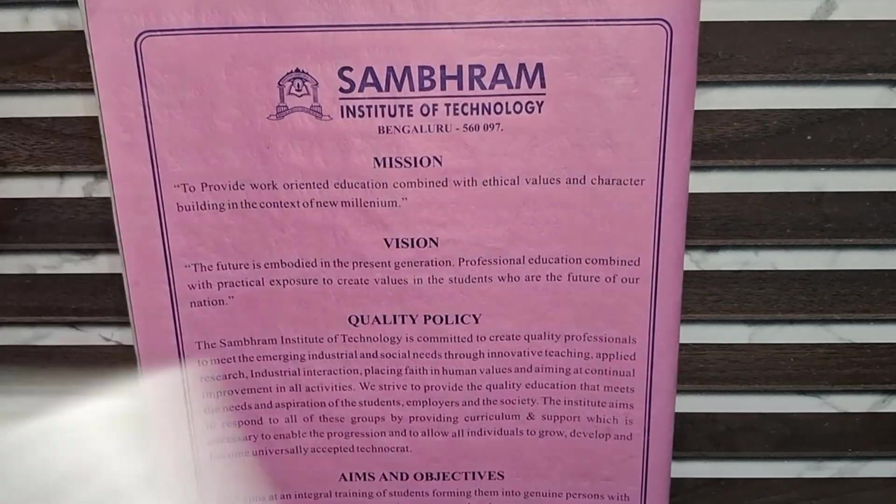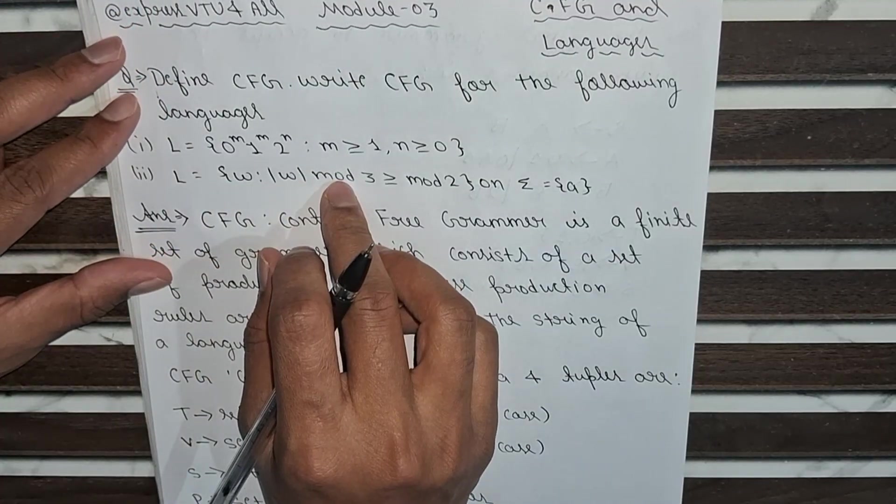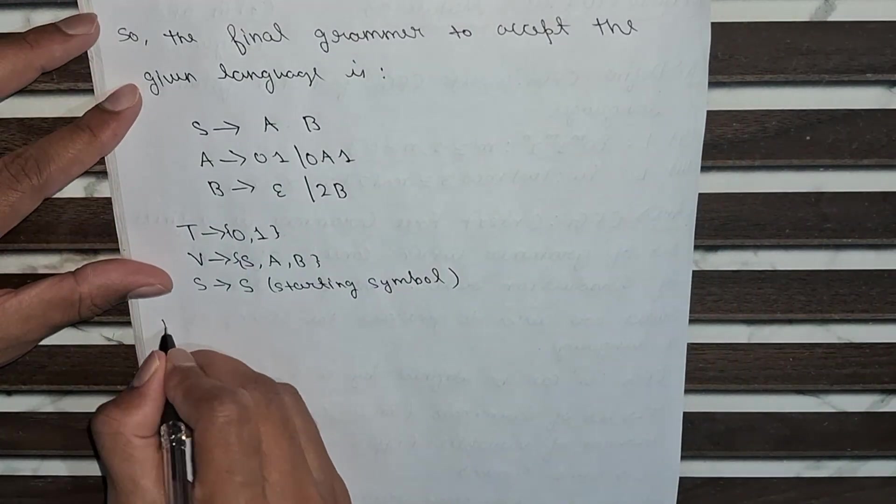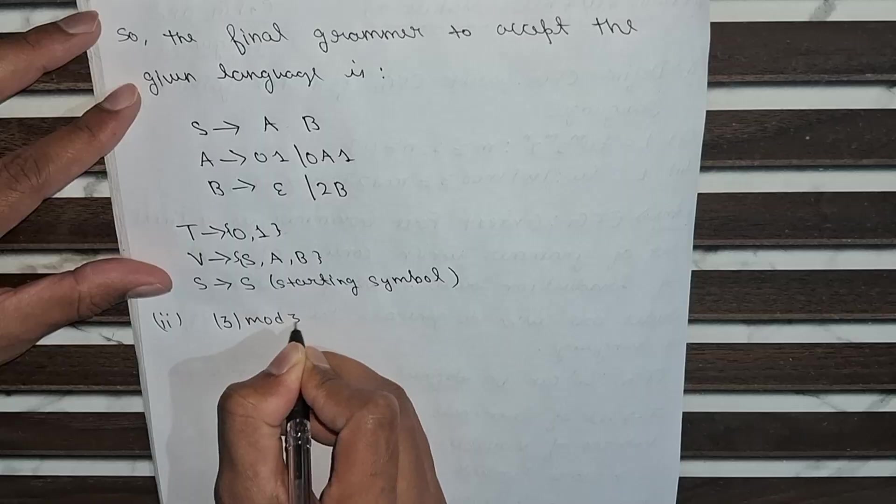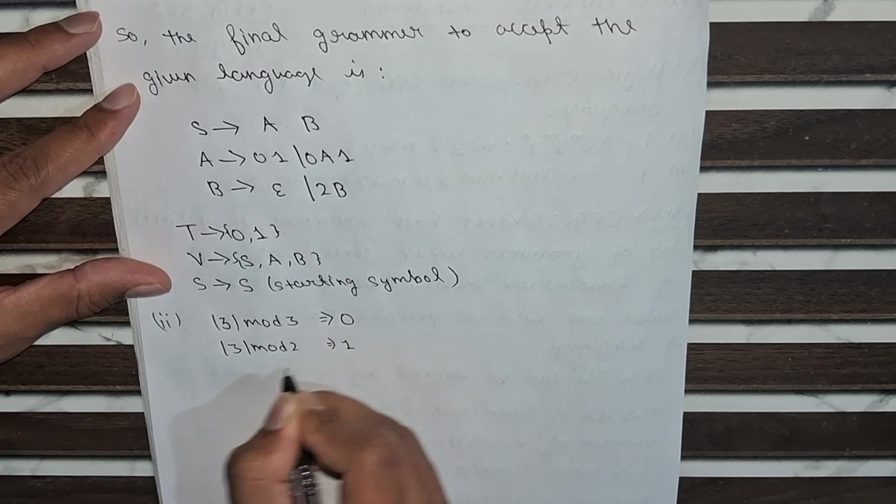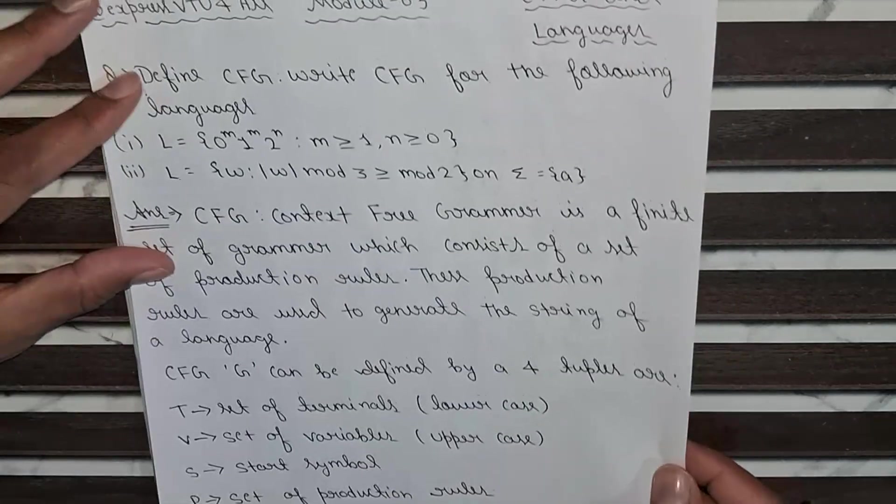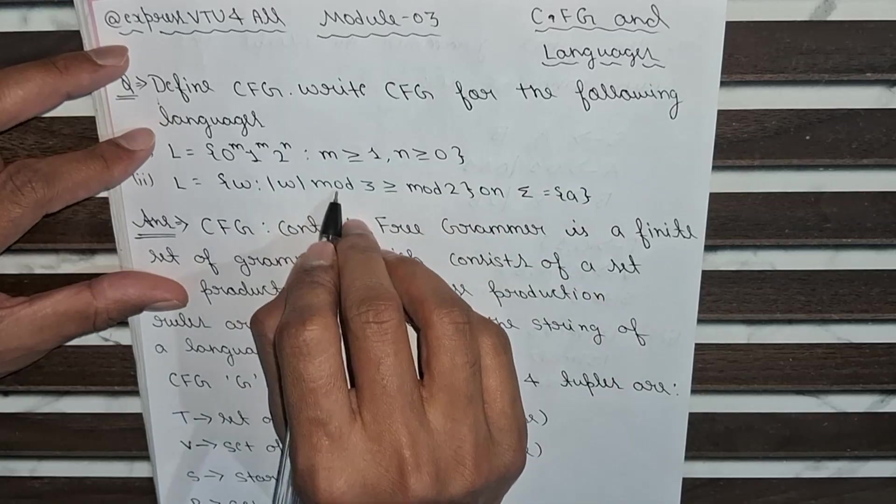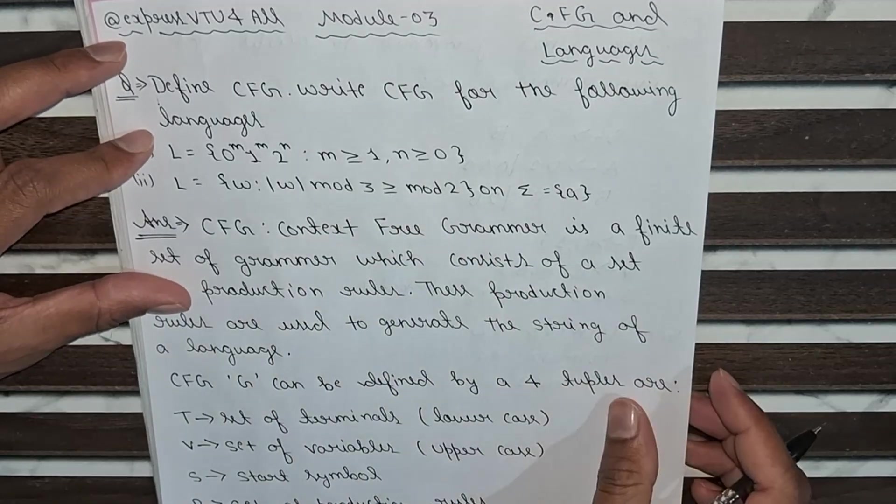Now we will move to our second part, which is L equals W such that |W| mod 3 is greater than or equal to |W| mod 2. Which means that if any number, we will let 3: 3 mod 3 equals 0, but 3 mod 2 equals 1, which means that 0 is smaller than 1. But here it should be greater than or equal to mod 2. Here the mod 3 is less than mod 2, so this condition will not satisfy for this language, so we will not take 3.